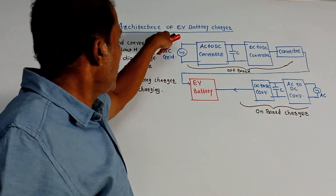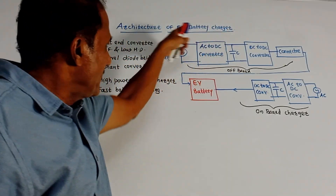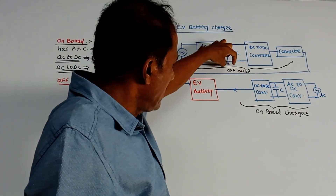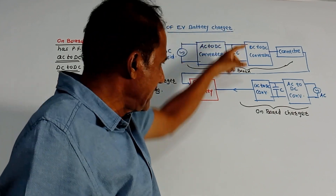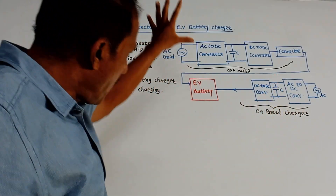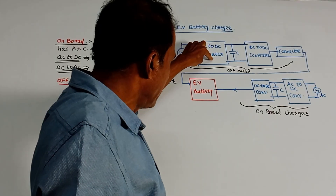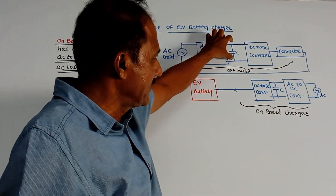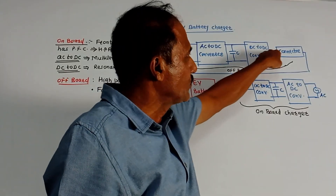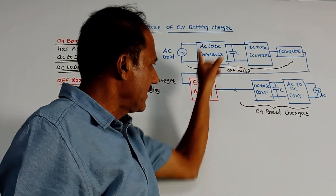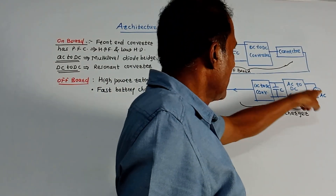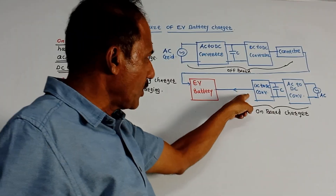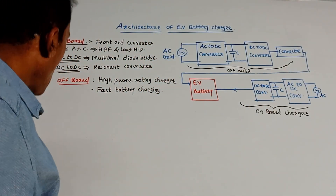The next and last part is the architecture of the EV battery charger. This diagram shows the architecture, which has two parts: an off-board charging system or an on-board charging system. Both systems consist of an AC-to-DC converter. In the off-board system, AC grid is applied at the input, then an AC-to-DC converter, an isolation capacitor, a DC-to-DC converter, and through a connector the battery is charged. In the on-board system, AC socket input is followed by AC-to-DC converter, a coupling capacitor, and DC-to-DC conversion applied to the EV battery.